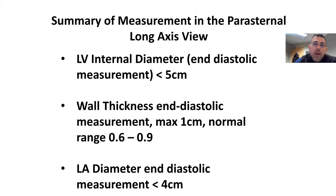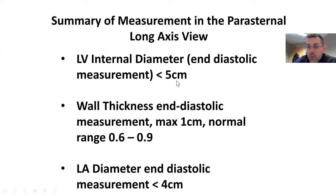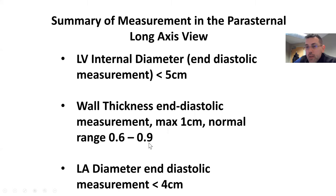To recap, a summary of measurements in the parasternal long axis view: left ventricular internal diameter, measured at end diastole, should be less than 5 centimeters. Wall thickness, also at end diastole — maximum is one centimeter, with normal range between 0.6 and 0.9. And left atrial diameter, again at end diastole, should be less than 4 centimeters.